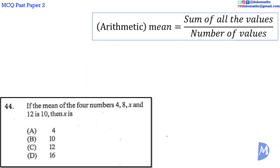Question 44. The arithmetic mean, or just mean, is equal to the sum of all the values over the number of values. We are given that the mean of four numbers, 4, 8, x, and 12, is 10.